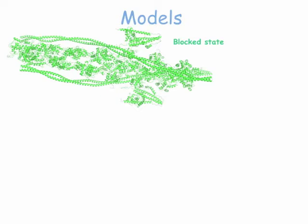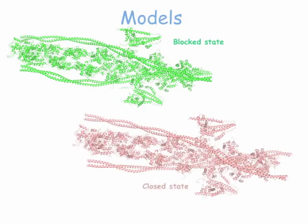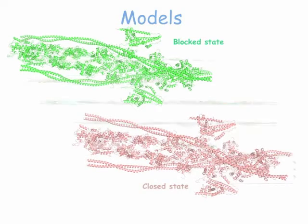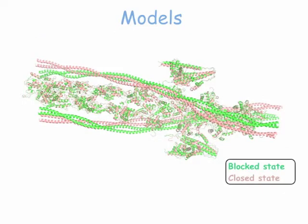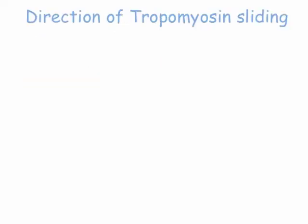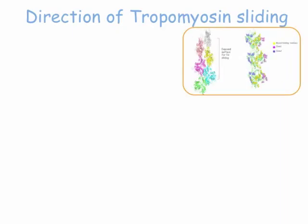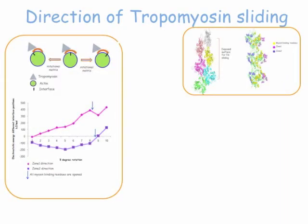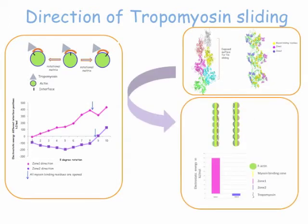Next, we modeled the closed state. Finally, these states are superimposed. Using the interface energy between the actin filament and tropomyosin in multiple regions, we predicted the direction of tropomyosin sliding from the blocked and closed state to the open state.